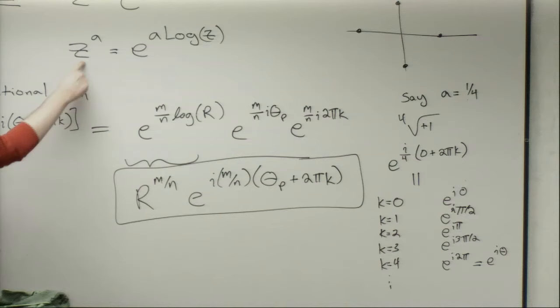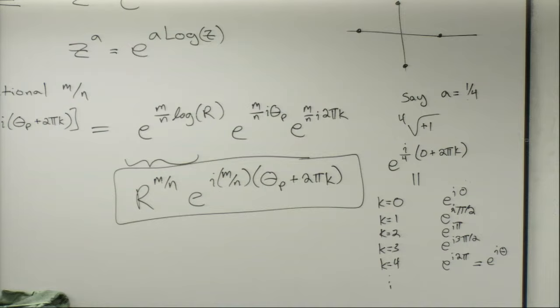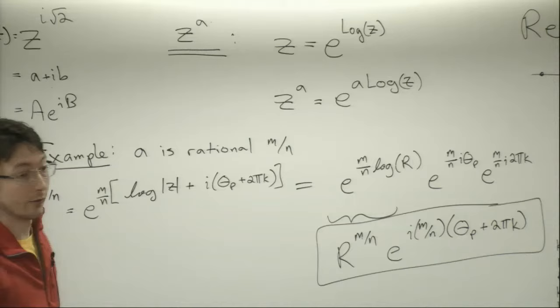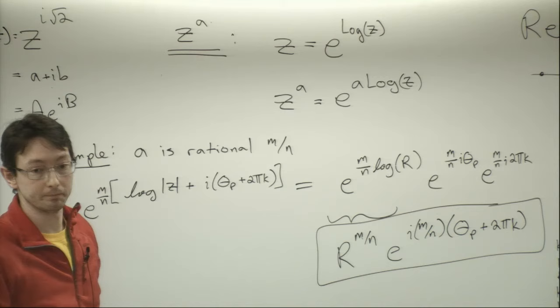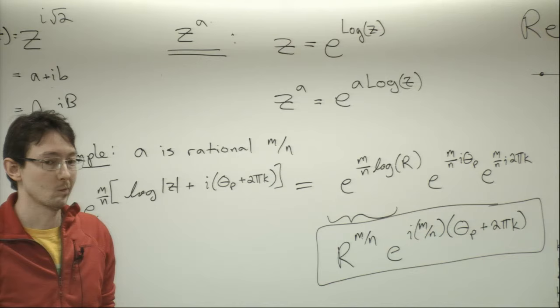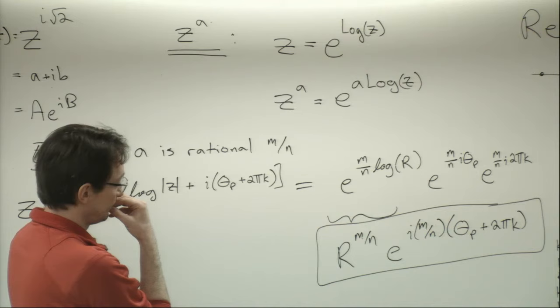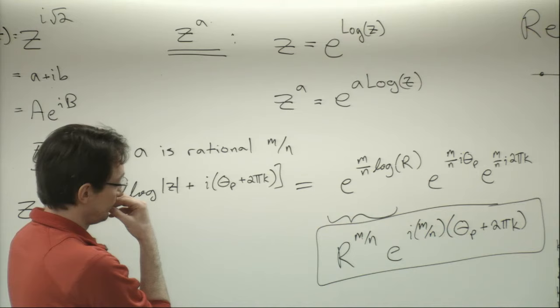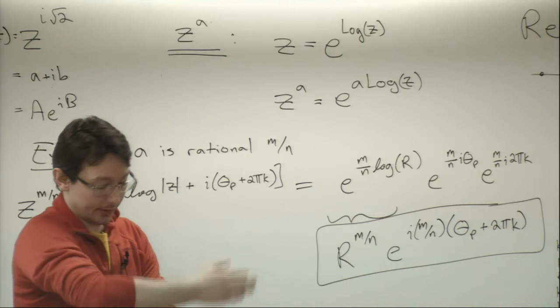You could take the 19th root of 5 + 7i. You'd find the radius and phase angle of 5 + 7i, and then take 19th fractions of 2 pi. For any complex number z and any rational power a, you can figure out easily what those roots are using this formula. Any questions about this roots of unity business?